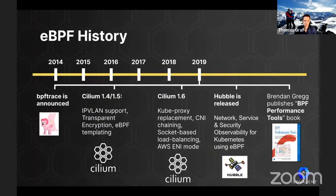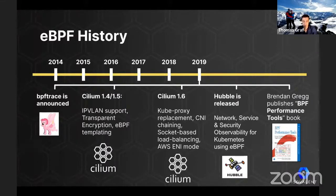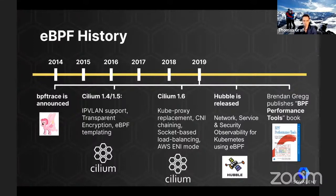In 2019, BPFTrace was announced, providing a higher-level abstraction compared to BCC — another giant leap forward for tracing. We also released Cilium versions 1.4 to 1.6 with things like IP VLAN support, transparent encryption, eBPF templating, a full kube-proxy replacement so you can get rid of those IPTables rules, CNI chaining to operate with other CNIs, socket-based load balancing, and even AWS CNI modes to natively integrate with cloud provider networks. But even more exciting, we released the Hubble open source project — an eBPF-based visibility platform for network, service, and security visibility.